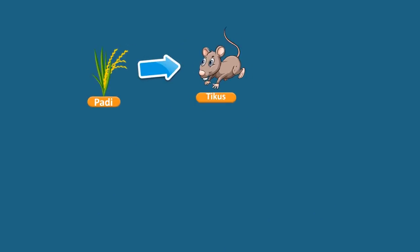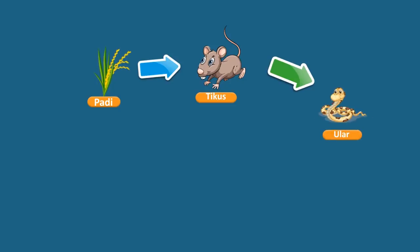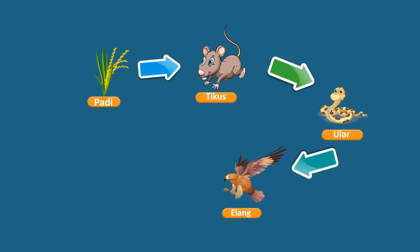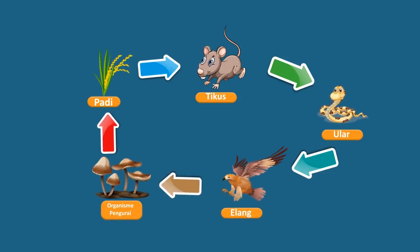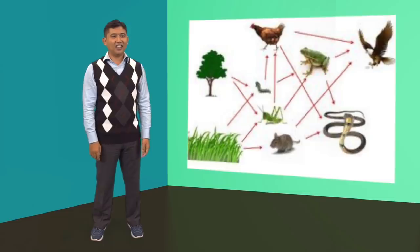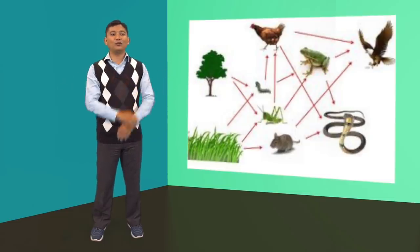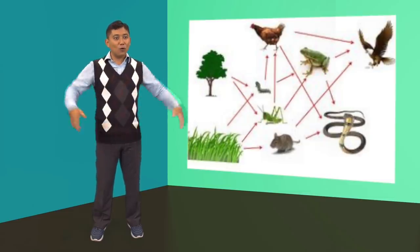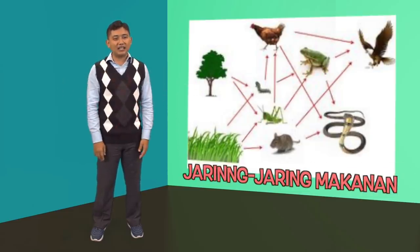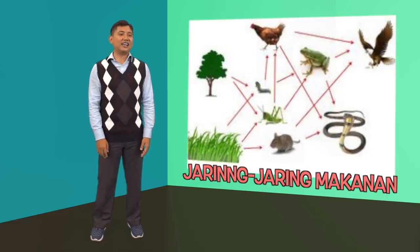Padi dimakan oleh tikus, tikus dimakan oleh ular, ular dimakan oleh elang, elang mati nanti akan diuraikan. Nah, dari beberapa rantai makanan itu berkumpul membentuk suatu jaring-jaring makanan.